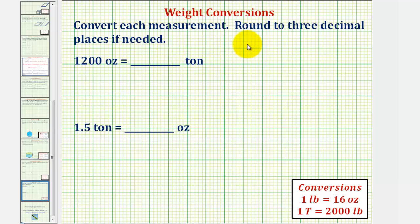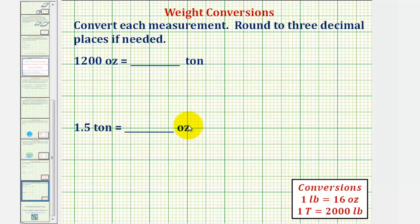We want to convert each measurement and round to three decimal places if needed. We want to convert 1,200 ounces to tons and 1.5 tons to ounces. The conversions we need are provided below. To perform the conversions, we'll multiply by unit fractions.